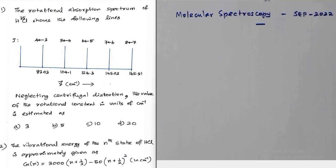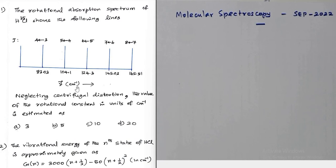Question number one: the rotational absorption spectrum of HCl-35 shows the following lines. The spectrum is given for J=3 to 4, J=4 to 5, J=5 to 6, J=6 to 7, and J=7 to 8 transitions, and their corresponding spectral lines are given in centimeter inverse. Neglecting centrifugal distortion, the value of the rotational constant in units of centimeter inverse is estimated as?